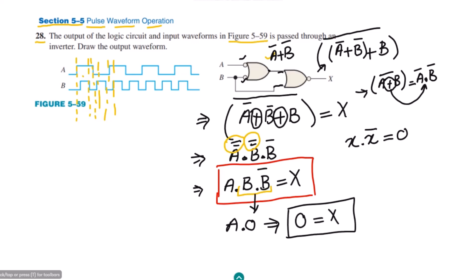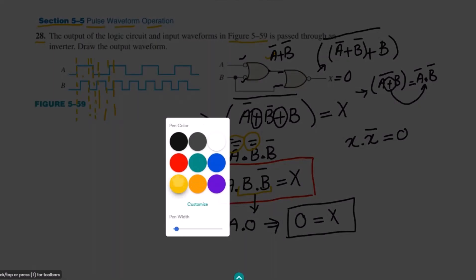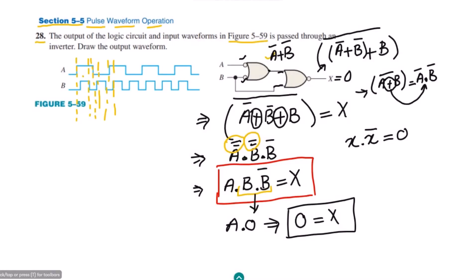The output X equals 0, and prior to application of any inputs, whatever the inputs are, the output will always be 0. So the waveform for X will always remain at 0 — it is a constant zero level. I think you have grasped the concept of how to find the output of any gate when different pulse waveforms are applied.